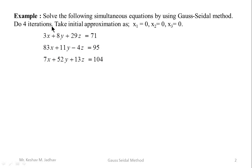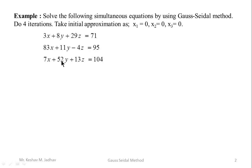Do four iterations. Take initial approximation as x1 = 0, x2 = 0, x3 = 0. The first equation is 3x + 8y + 29z = 71. The second equation is 83x + 11y − 4z = 95. And the third equation is 7x + 52y + 13z = 104.